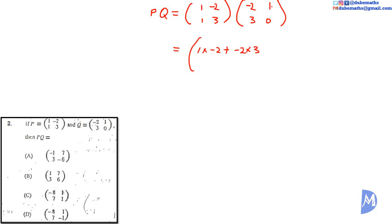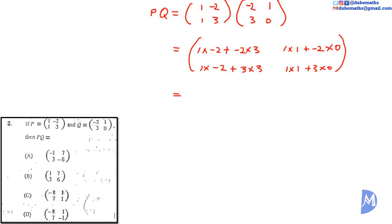We multiply the first row by the second column to get the first row, second column of the answer: 1 multiplied by 1 added to -2 multiplied by 0. We multiply the second row by the first column to get the second row, first column of the answer: 1 multiplied by -2 added to 3 multiplied by 3. Simplifying: 1 multiplied by -2 is -2, added to -2 multiplied by 3 which is -6. Negative 2 added to -6 is equal to -8. And 1 multiplied by 1 is 1, and -2 multiplied by 0 is 0; 1 added to 0 is 1.